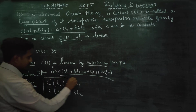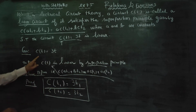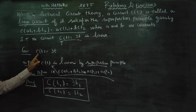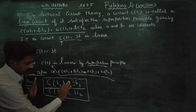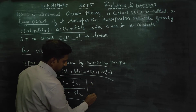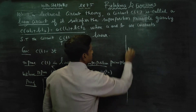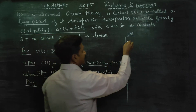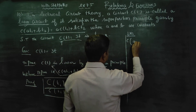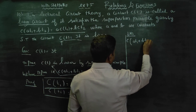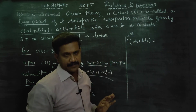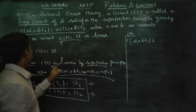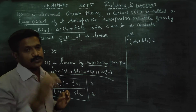Given C of T is equal to 3T: C(T1) is going to be 3 times T1, and C(T2) is going to be 3 times T2. This is result number 1 and result number 2.